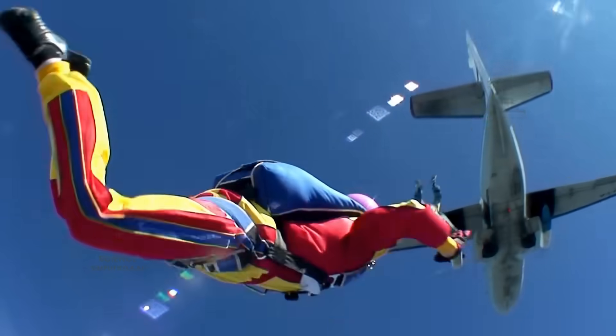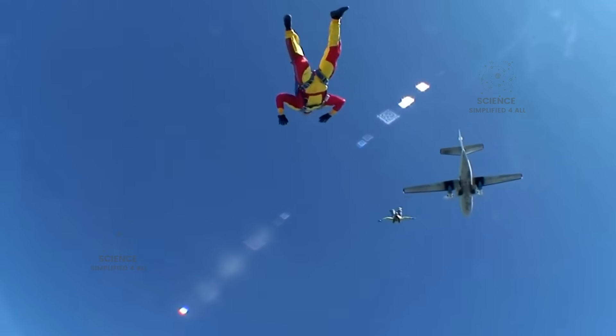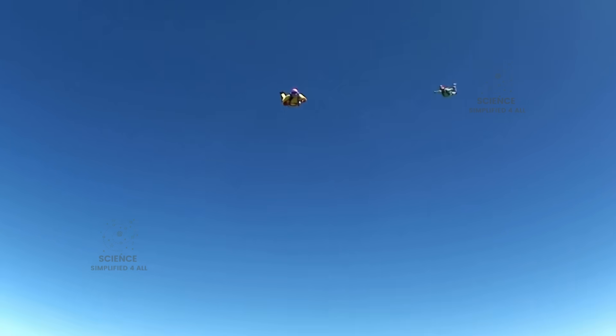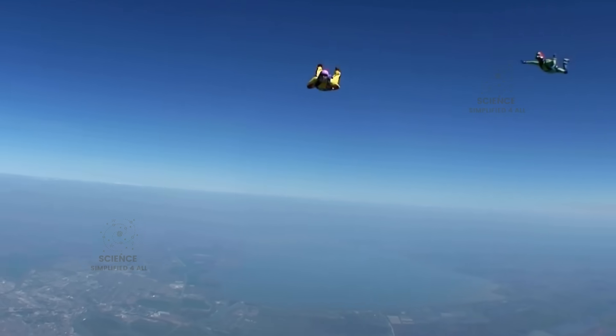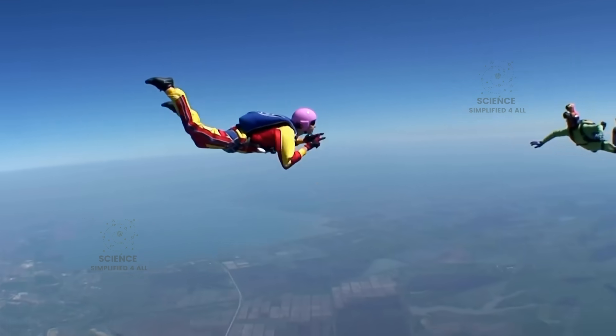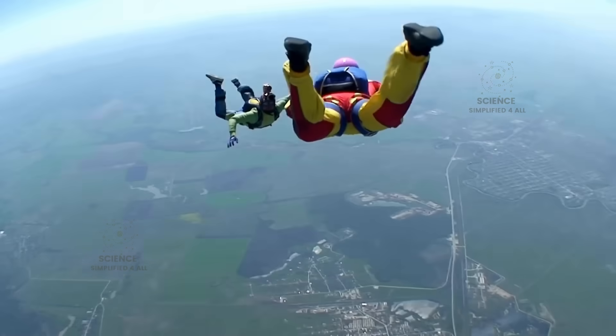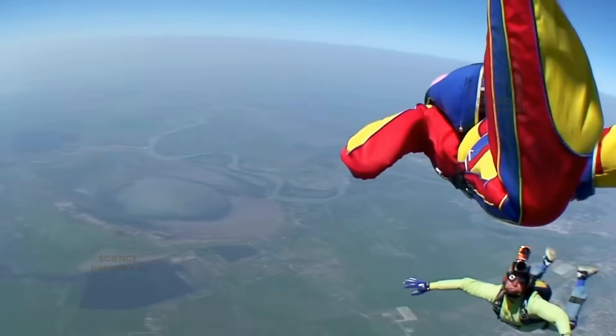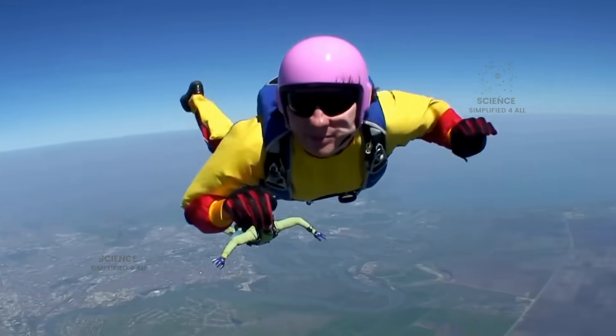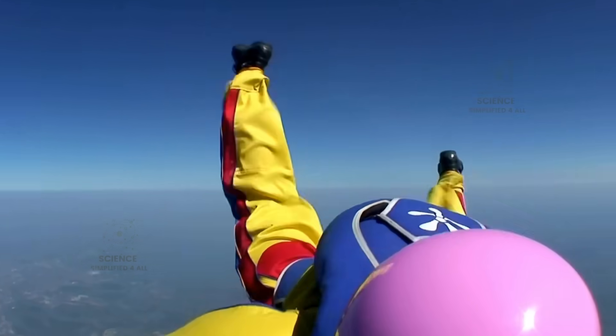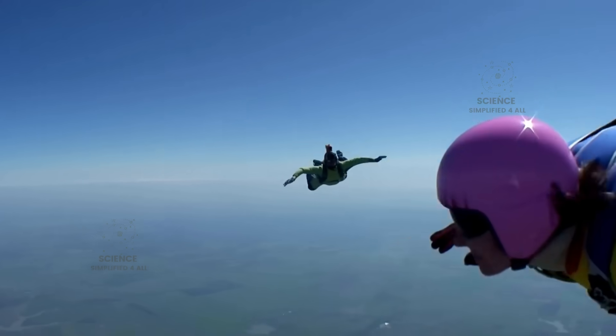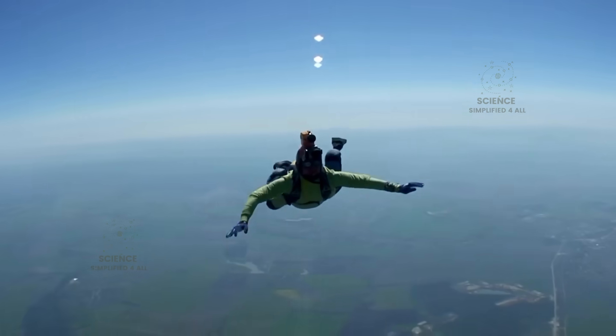When a skydiver jumps out of a plane, gravity pulls them downward and their speed starts increasing. But once their speed reaches around 200 km per hour, it stops increasing. From that point onward, the skydiver continues to fall at that constant speed. That is their terminal velocity. This value of 200 km per hour applies when the skydiver is falling belly down, with arms and legs spread out. In that posture, air resistance is higher.